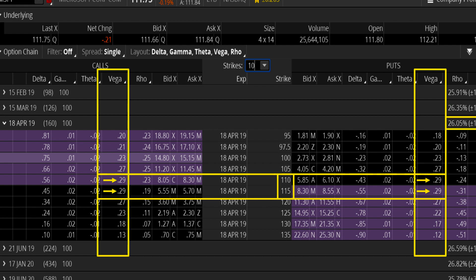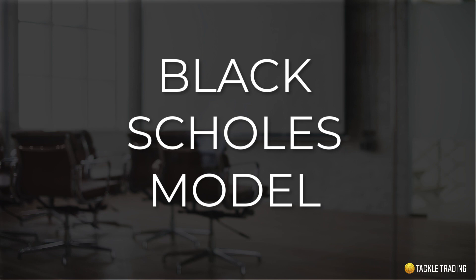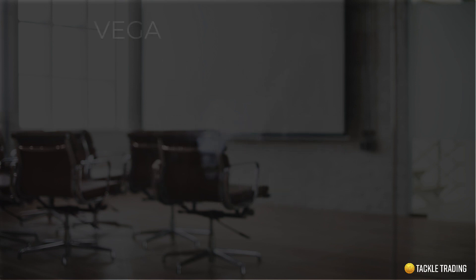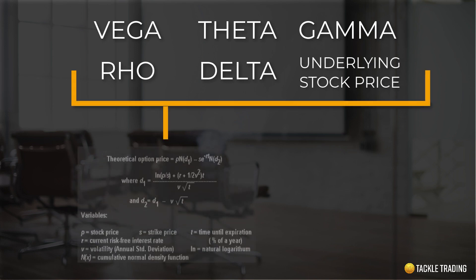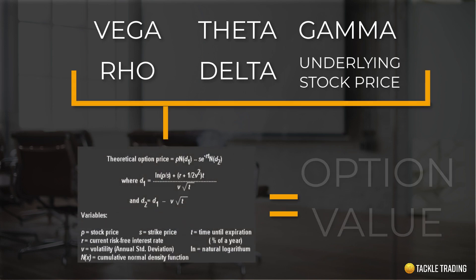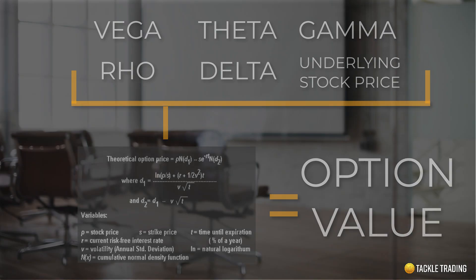Over here on the right, you can see the current measure of implied volatility — it's at 26.05%. So if you saw that rise to 27.05%, that'd be a 1% increase. If you saw it fall down to 25.05%, that'd be a 1% decrease. By now you're getting really used to how the Black-Scholes model works. All the variables go in there: Vega for volatility, Theta for time, Gamma for velocity, Rho for interest rates, and Delta for the direction up and down of that stock price. All of that gets pumped into the Black-Scholes model, and coupled with supply and demand pressures, the option value is determined.